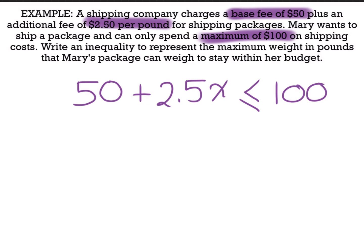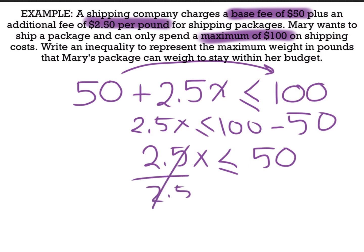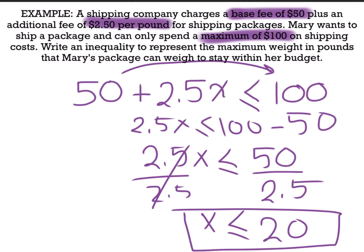Since we have our equation set up, we can solve for x by taking 50 to the other side, leaving us with 2.5x ≤ 100 − 50, which is 2.5x ≤ 50. To isolate x, we divide both sides by 2.5, giving x ≤ 20. So Mary's package cannot be greater than 20 pounds to stay within her budget of $100. We found the pounds and the equation for Mary's situation.